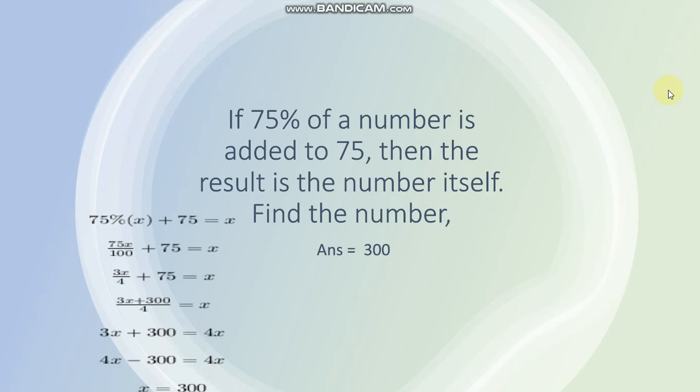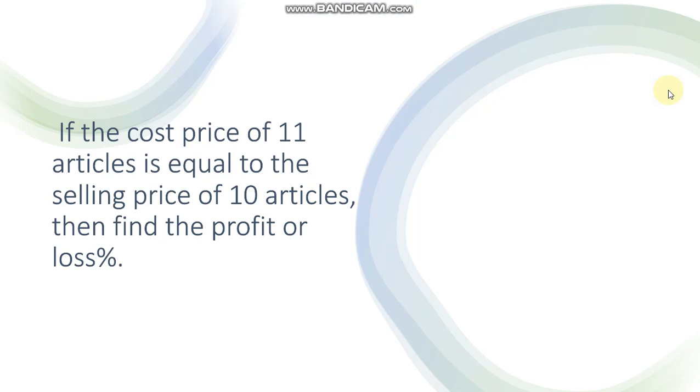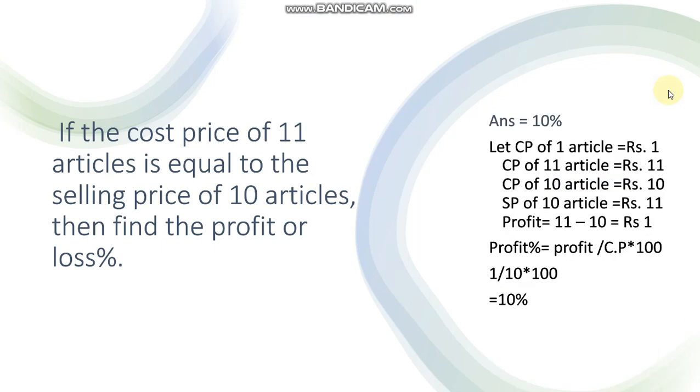Next question is if the cost price of 11 articles is equal to selling price of 10 articles, then find the profit or loss percent. Answer is 10 percent. How you will calculate? Let CP of 1 article is equal to rupees 1. Now CP of 11 articles is equal to rupees 11. 10 articles ki CP kitni hoegi? 10 rupees. Aur agar ham SP calculate karayin, kya given hai question mein? 10 articles ki SP kis ki equal hai? 11 articles ke cost price ke equal hai.